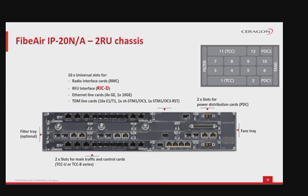The RFU interface card RIC-D is for use with RFUD or RFUS with integrated Power over Ethernet, and RFUDHP powered by external DC power, supporting up to 4096 QAM modulation. Available Ethernet line cards include: LIC-XE4 electrical with 4xGE featuring 1 GbE combo and 3 GbE electrical RJ-45 interfaces (slots 2 and 12 only); LIC-XE4 optical with 4xGE featuring 1 GbE combo and 3 GbE optical SFP interfaces (slots 2 and 12 only); and LIC-XE10 with 1 optical 10 GbE interface (slots 2 and 12 only).